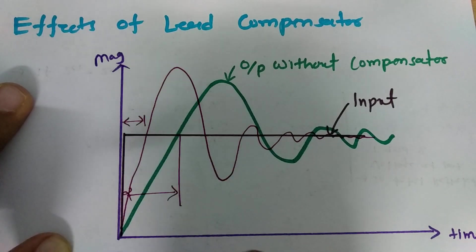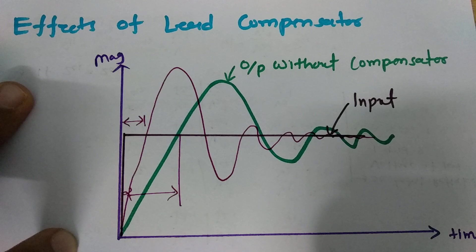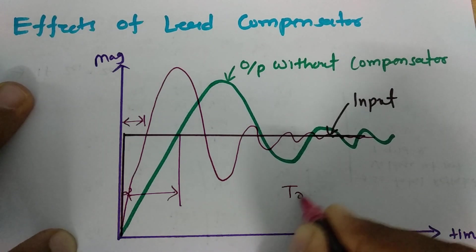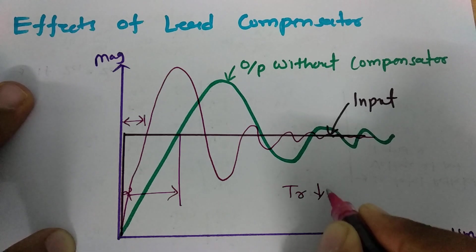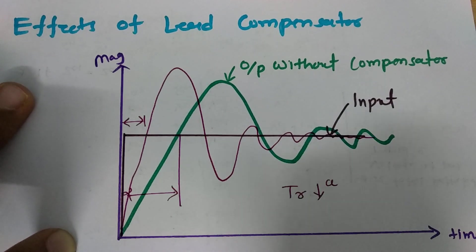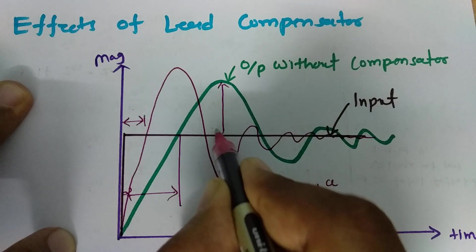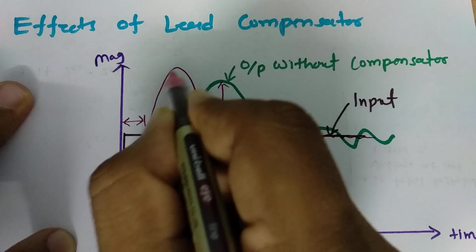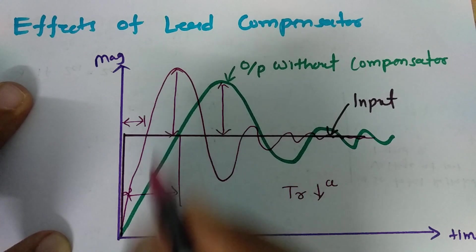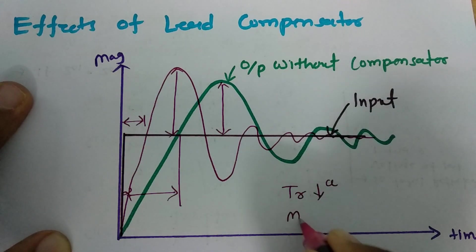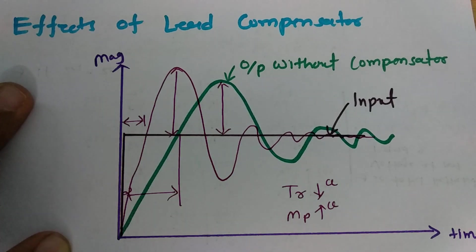So rise time with the lead compensator is decreasing — it will go down. Secondly, one more thing you can see is the maximum peak overshoot. If you decrease rise time, the maximum peak overshoot will increase. So maximum peak overshoot increases.